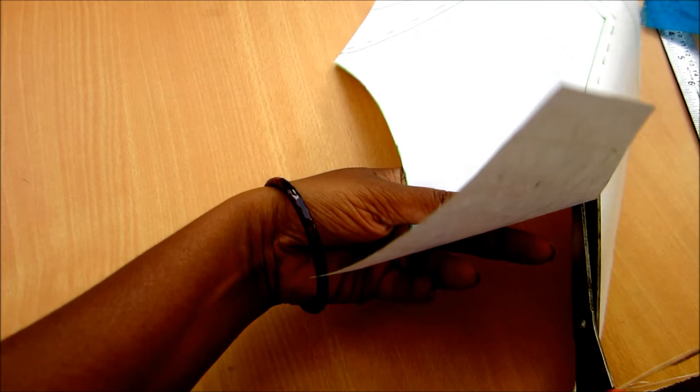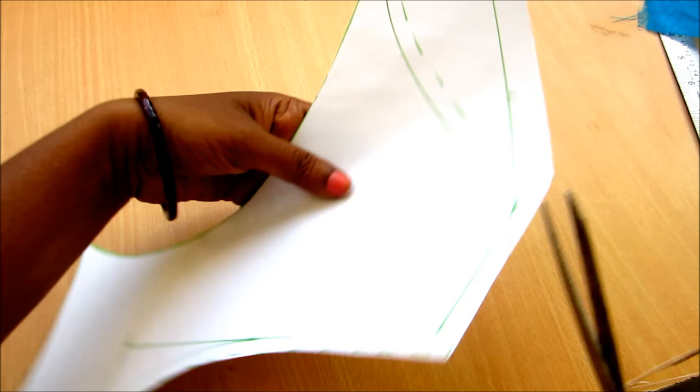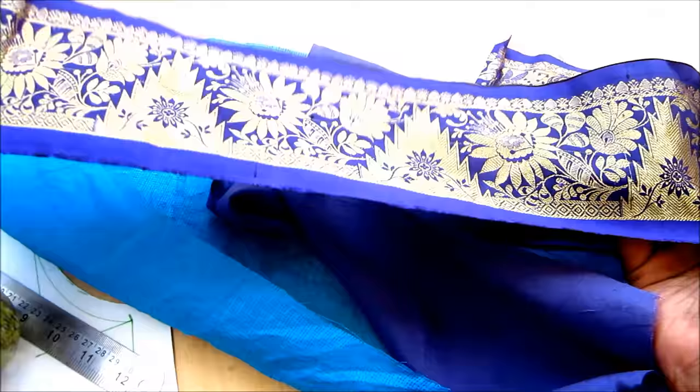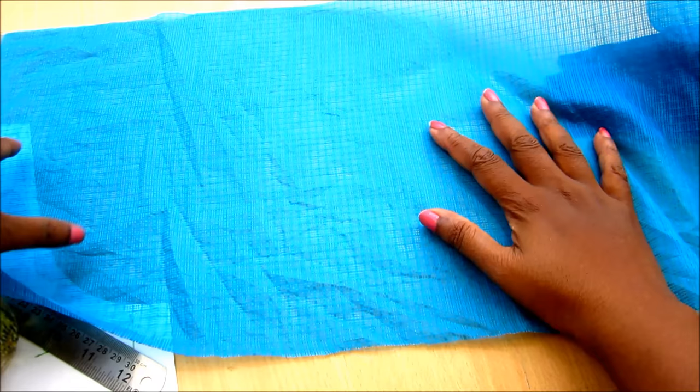The front also you can go with the boat neck normal blouse or the princess seam blouse. For this project I'll be using this pure pattu or the silk border with the beautiful floral and temple design.